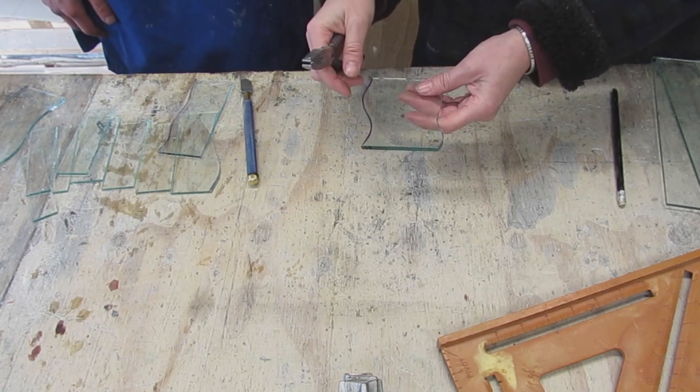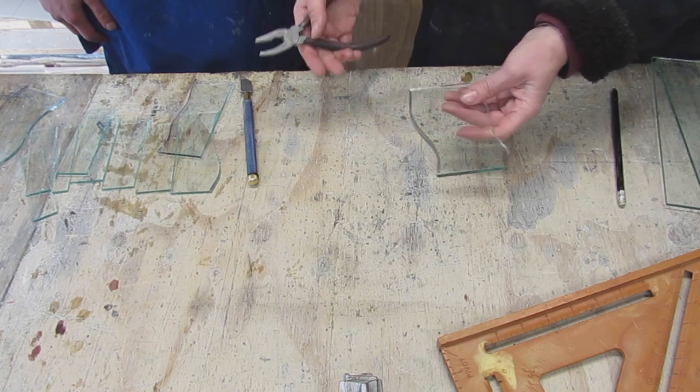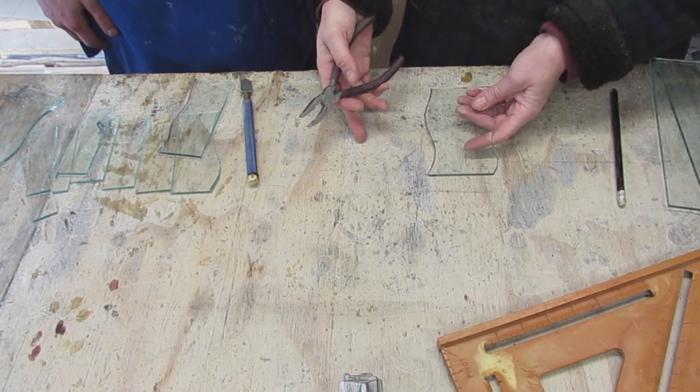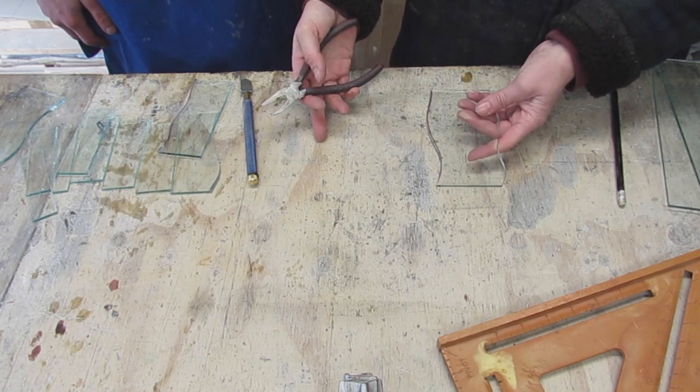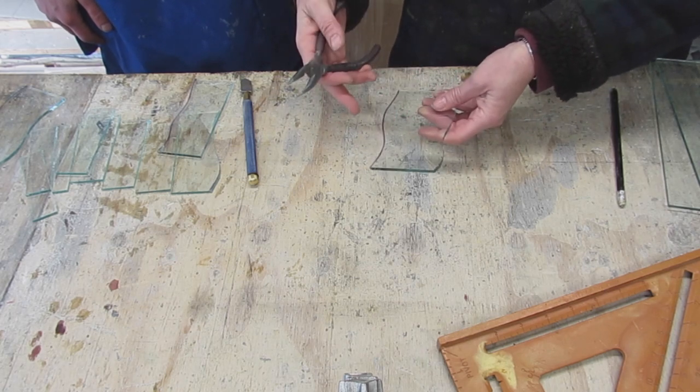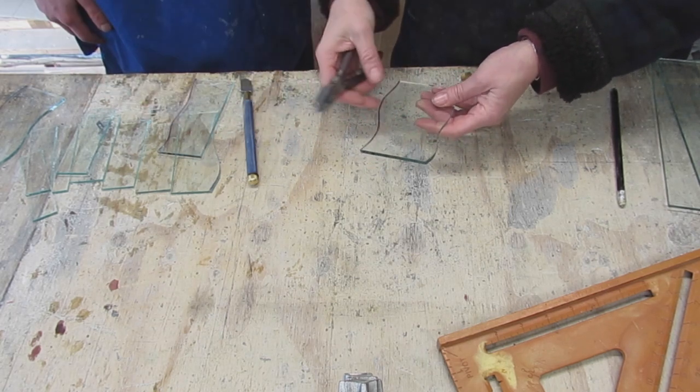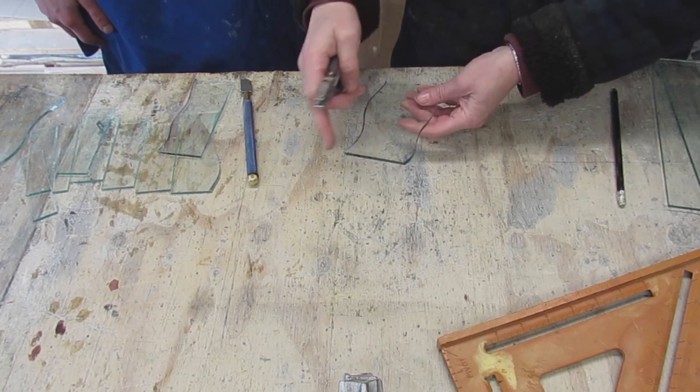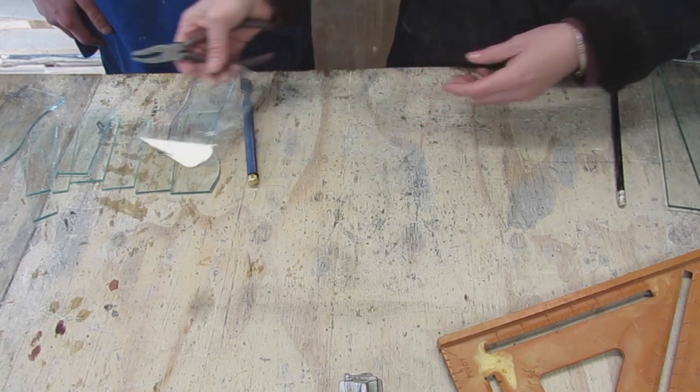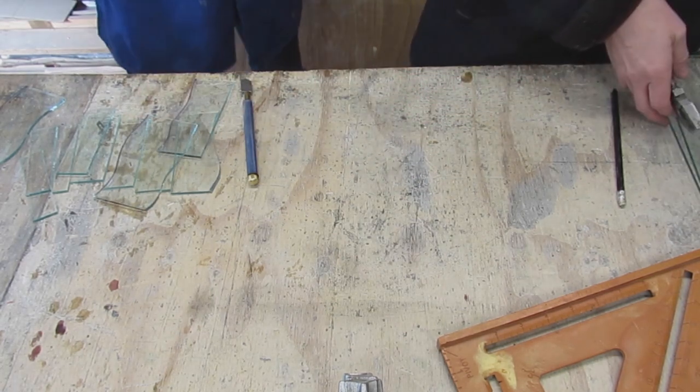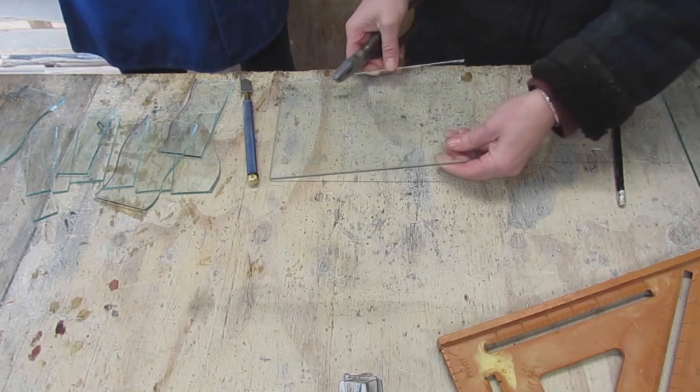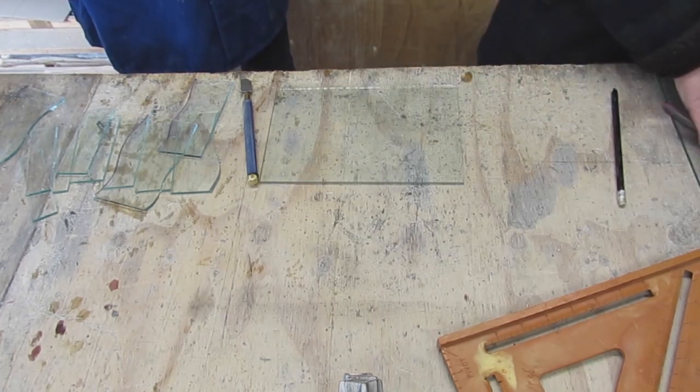But when you're cutting glass, sometimes there might be something under your glass which causes your glass to shatter, or there might be an imperfection in the glass and it will go off in the wrong direction. But generally, with a cut like this, they ought to be fine. I'm going to make it more difficult now because you're too good.